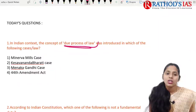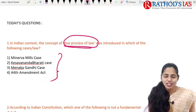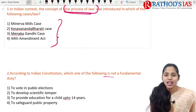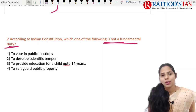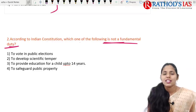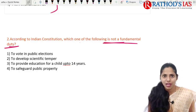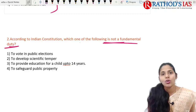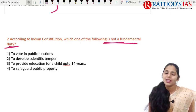For the Article 19 question on freedom of movement: entry of outsiders into tribal areas can be restricted, and movement of prostitutes can be restricted on grounds of public health. Both statements are correct, so the answer is option three (both A and B). Today's questions are: which case introduced the concept of due process of law in the Indian context, and which of the following is not a fundamental duty? Please give your answers in the comment box. Thank you and please subscribe to Rathod's IAS Academy.